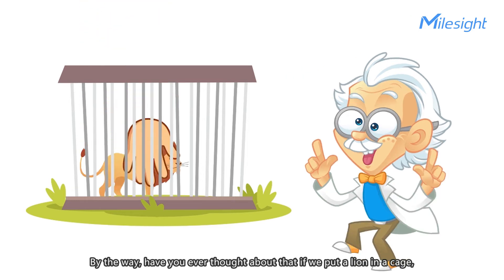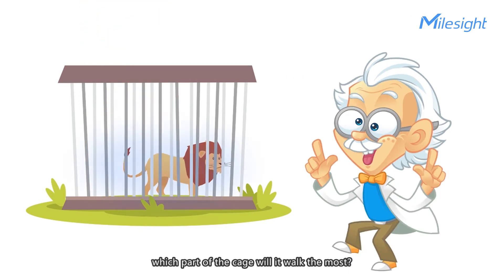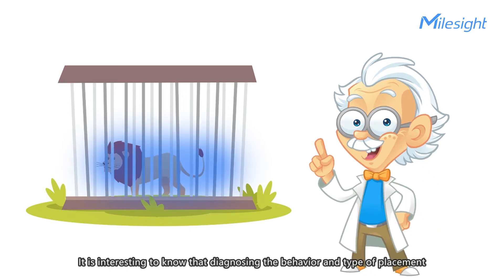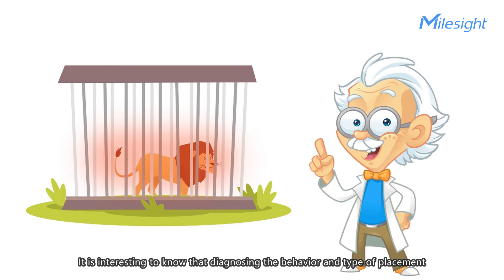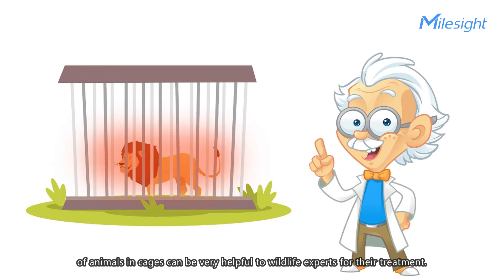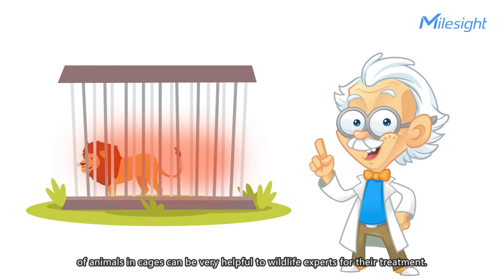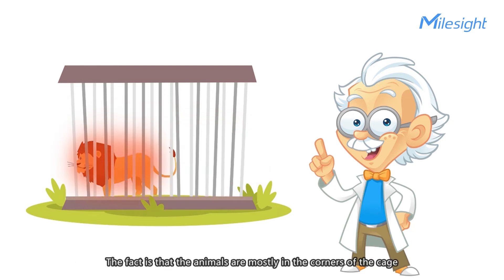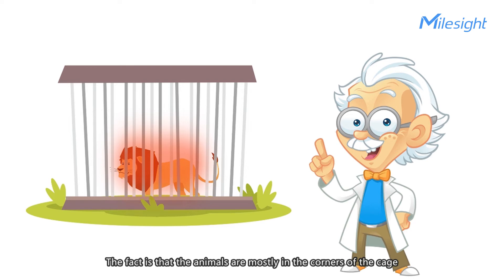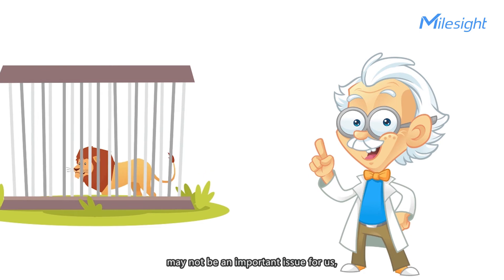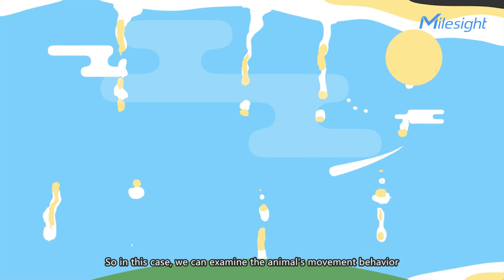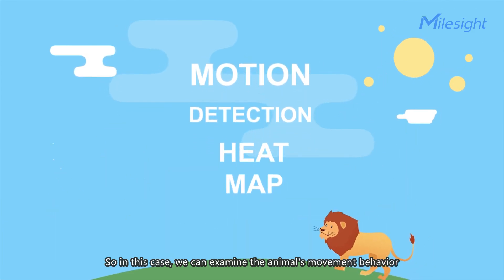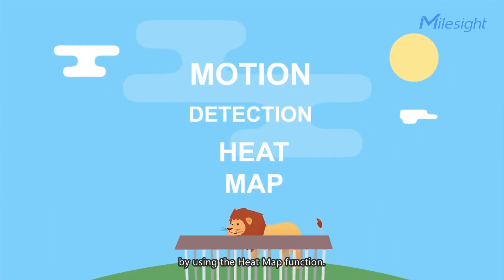Have you ever thought about if we put a lion in a cage, which part of the cage it would walk the most? It's interesting to know that diagnosing the behavior and placement of animals in cages can be very helpful to wildlife experts for their treatment. The fact is that animals are mostly in the corners of the cage or in the middle of it — it may not seem important to us, but it is important to wildlife experts. In this case, we can examine the animal's movement behavior by using the heatmap function.